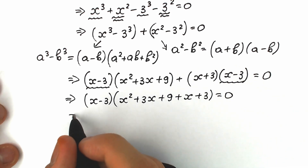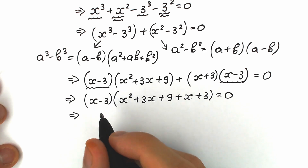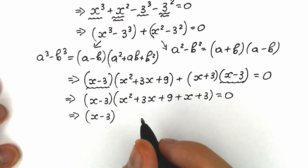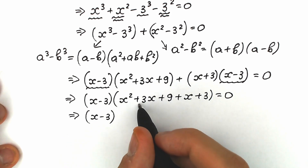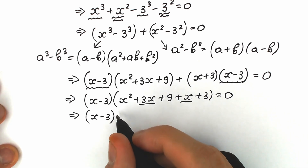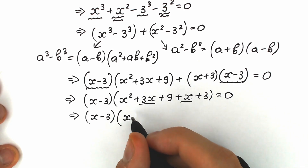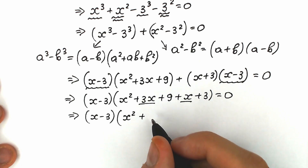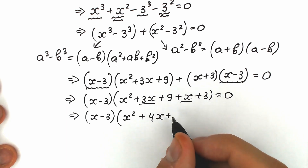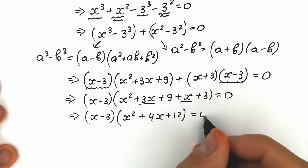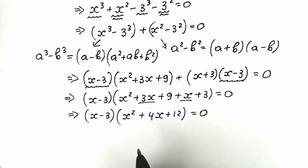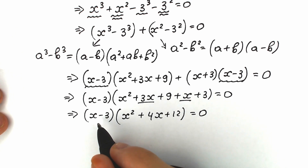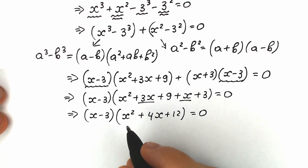Now let's simplify inside the second parenthesis. We have x² + 3x + x + 9 + 3, combining like terms: 3x + x = 4x and 9 + 3 = 12. So we get (x - 3)(x² + 4x + 12) = 0.